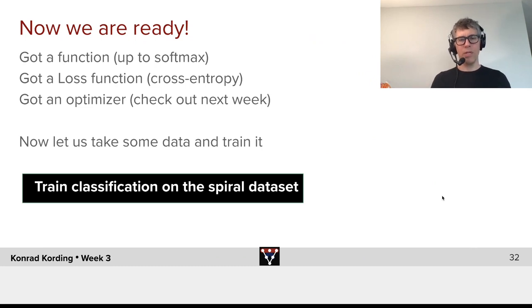Now, we're ready. What we have is we have a function, which is the neural network up to the softmax, and we have a loss function, which is cross-entropy here, and we just choose an optimizer. We will learn a lot more about optimizers next week. And now it's time to take some data and train it on the data. And what we will do is we will use a simple 2D case because we can meaningfully visualize it and learn from it. So now, train classification on the spiral dataset.